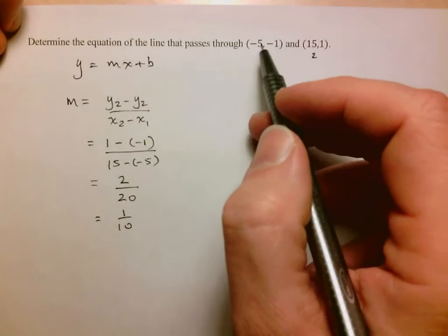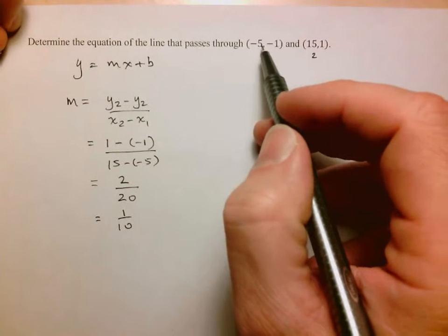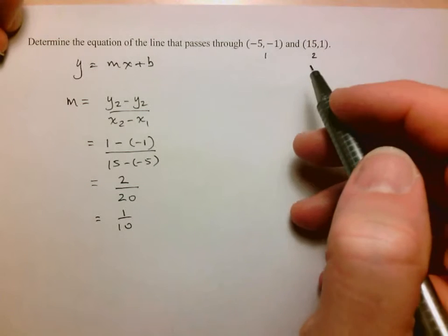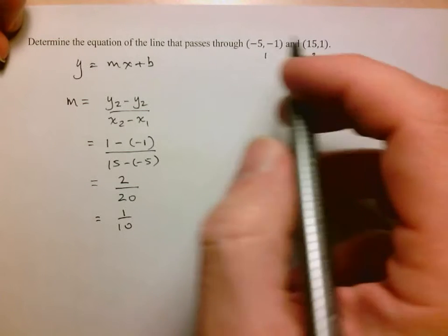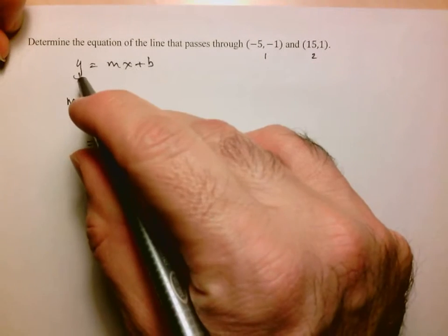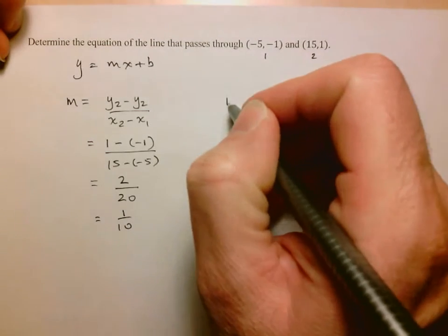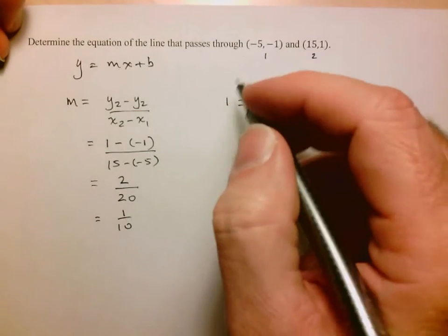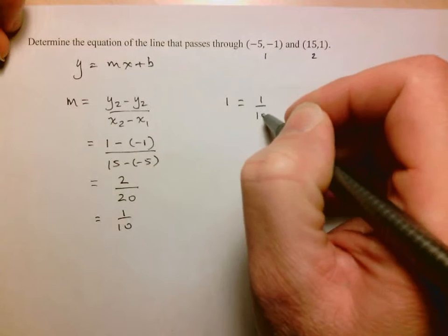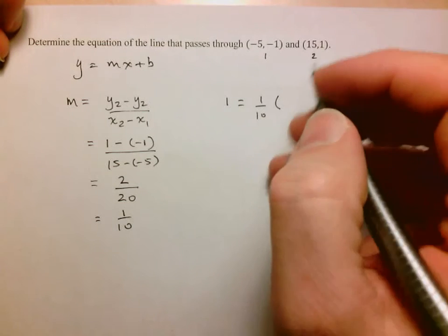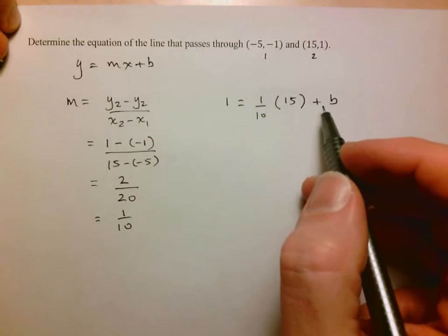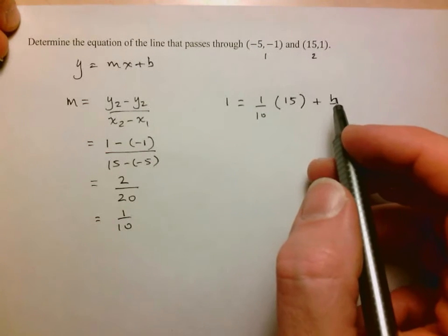So here I could either choose negative 5, negative 1 to keep my numbers closer to 0, or choose 15 and 1 to keep everything positive. I guess we'll keep everything positive here. So now I take my equation, y equals mx plus b, and I replace y by the y value that I've chosen, so 1. My slope we calculated as 1 over 10. My x value here is 15, and then plus b.